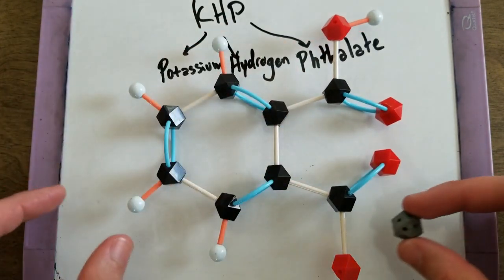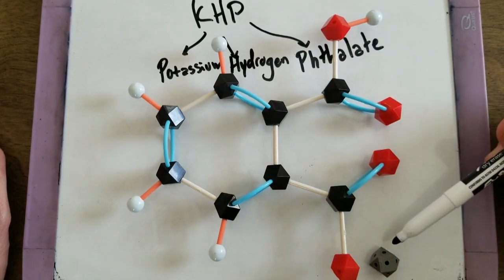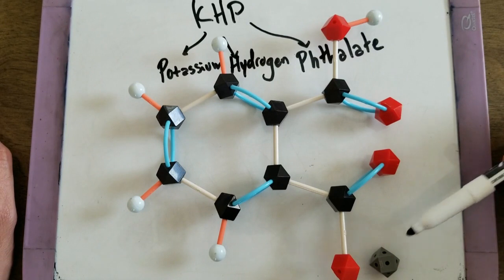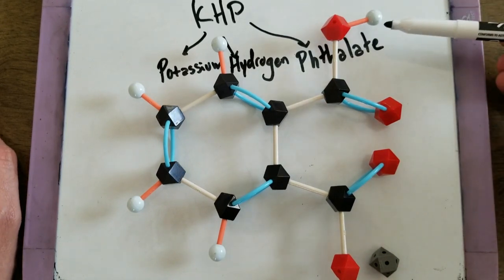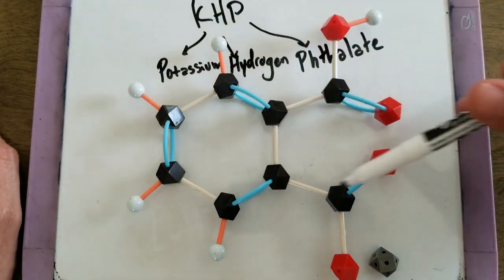Where the potassium is here. The hydrogen that it's referencing is here, and the entire rest of this is called phthalate.